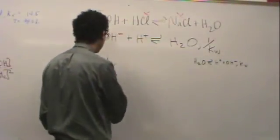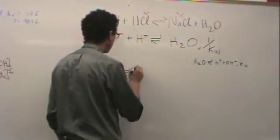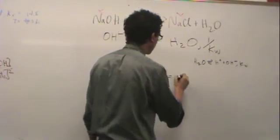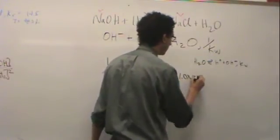So 1 over Kw equals 1 over 1.0 times 10 to the minus 14. This is going to be 1.0 times 10 to the plus 14.